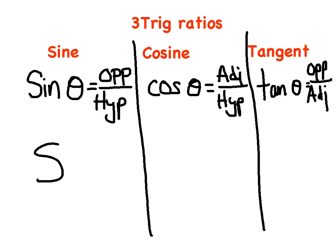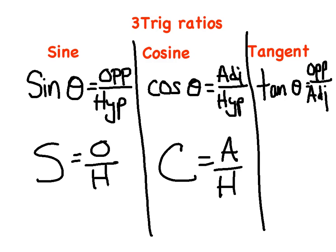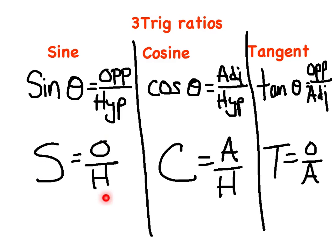Go ahead and jot down SOH-CAH-TOA and get used to saying it and learning how to spell it — this will help you remember the trig ratios. TOA is the easiest one: T-O-A stands for Tangent equals Opposite over Adjacent. CAH: C stands for Cosine, A for Adjacent, H for Hypotenuse. SOH: S for Sine, O for Opposite, H for Hypotenuse. We need to memorize SOH-CAH-TOA, hopefully by tomorrow.